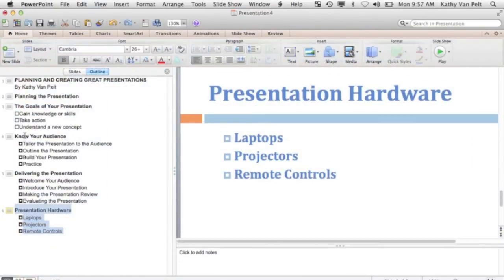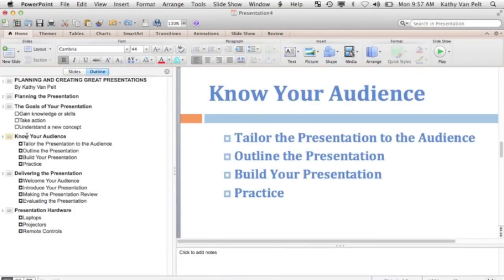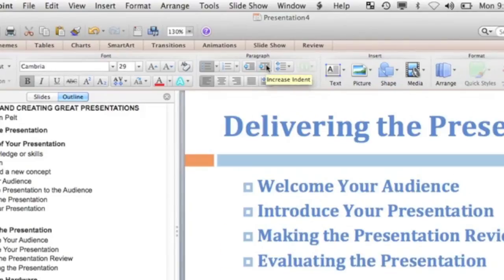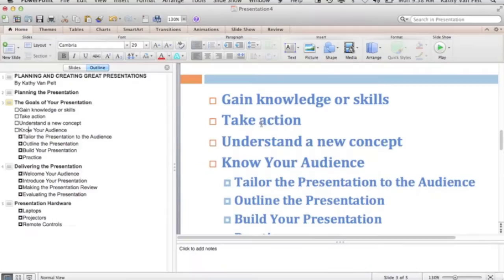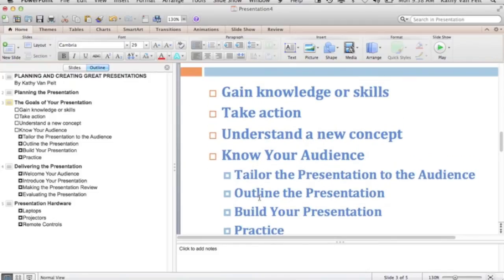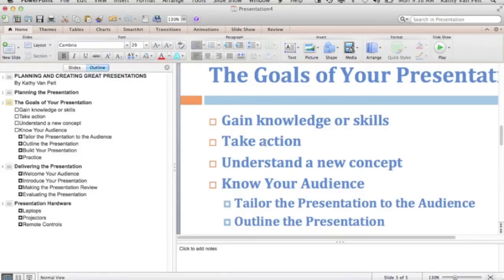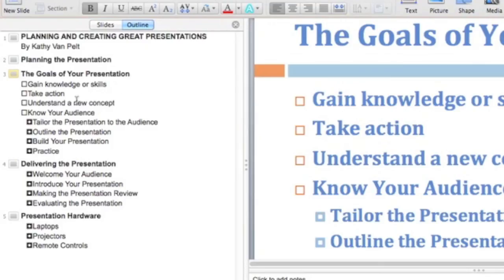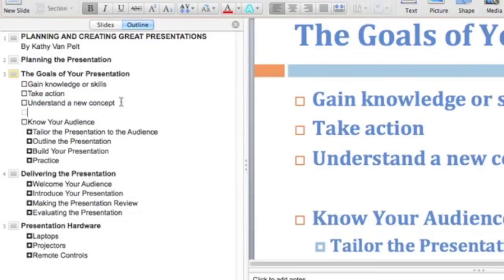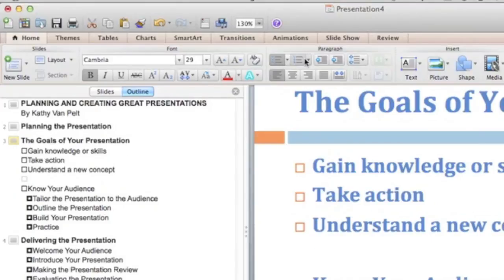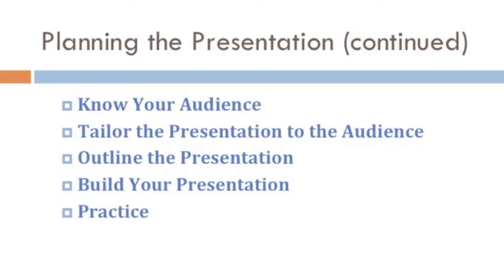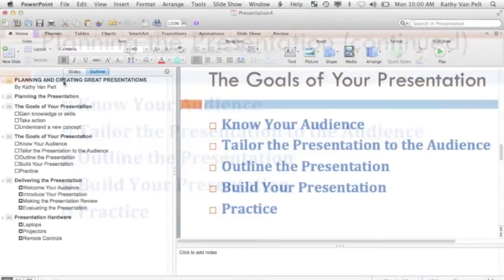I'm going to demote 'Know Your Audience' — right now it's a slide title. Demoting is the opposite of promoting. You can use the Tab key or click Increase Indent in the Paragraph group on the Home tab. Now we have eight lines on this slide, which is too many. To create a new slide in the outline, click at the end of the last bulleted paragraph, press Enter to make a new bullet, then promote it. This continuation will basically be 'Planning the Presentation continued.'